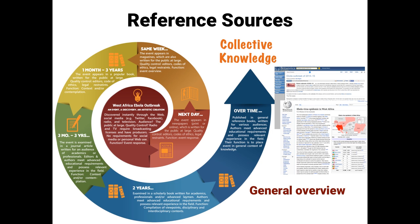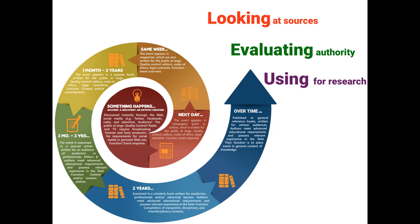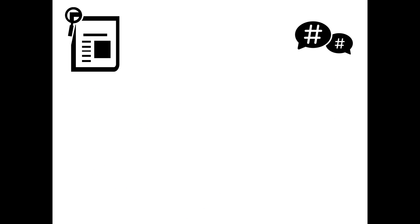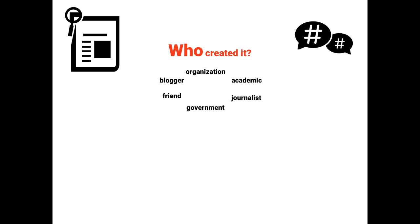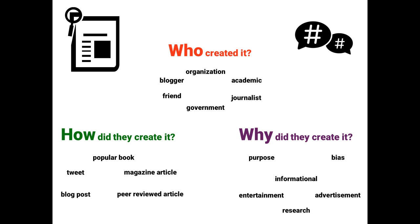Now that you understand the ways in which information is created, you can become a part of the creation process by looking at the sources, evaluating them for authority, and using them for your research. Whether it's looking at the most authoritative sources to help you write a research paper, or scanning social media to learn about breaking news, understanding who created it, how the information was created, and why it was created will help you to form your own opinion and enter into the research conversation.